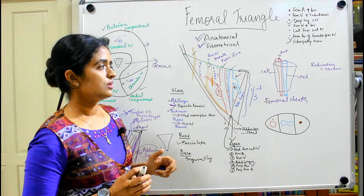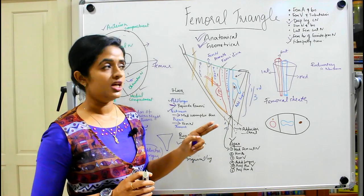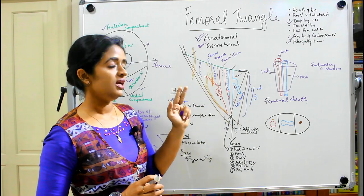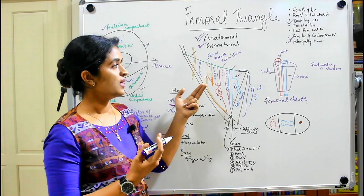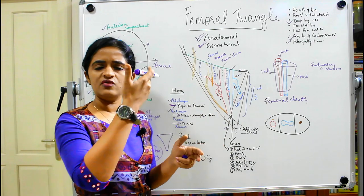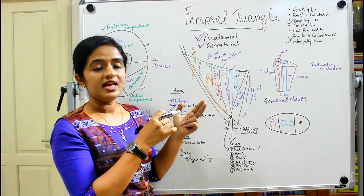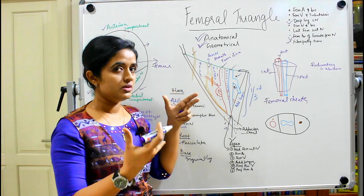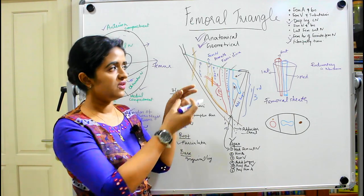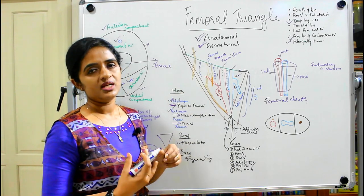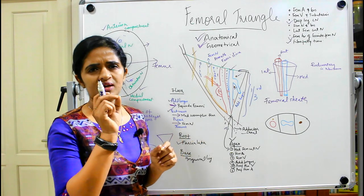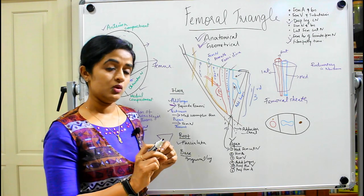The purpose of the femoral sheath is to allow smooth gliding movement under the inguinal ligament. In newborns, the femoral sheath is rudimentary because the thigh is in a flexed position. As the newborn begins to sit and walk, the thigh extends, and the femoral sheath prolongs downwards to reach the adult position.